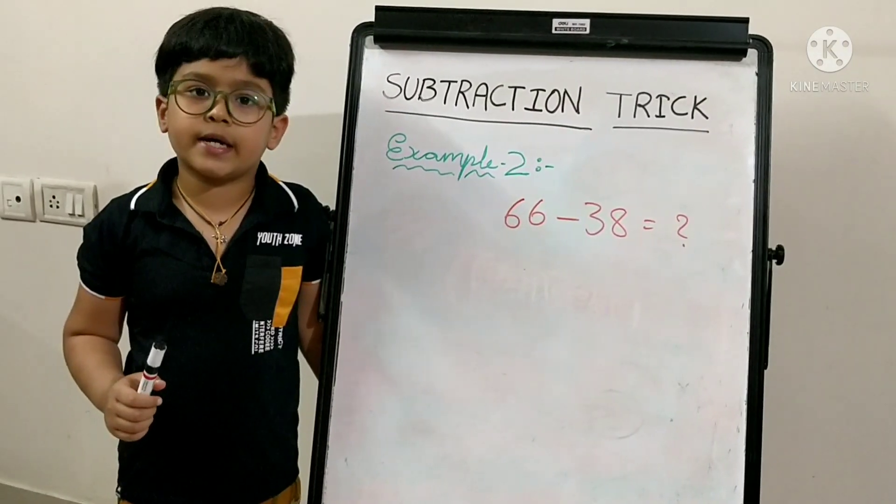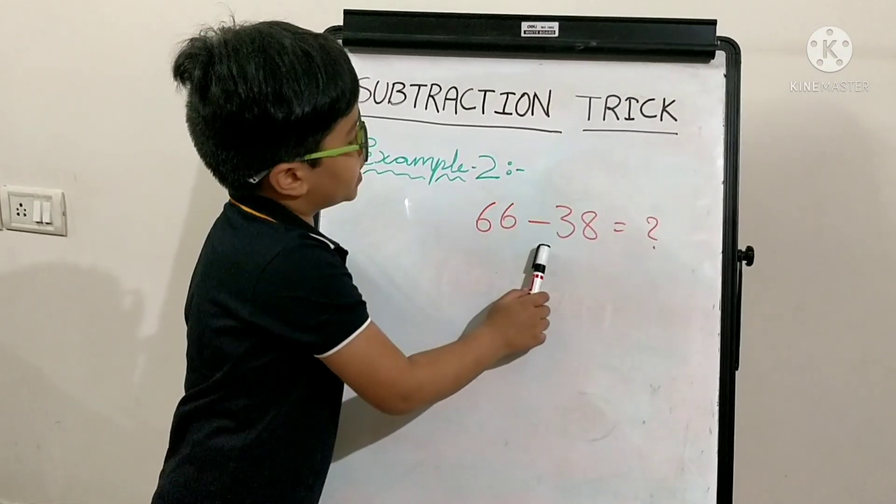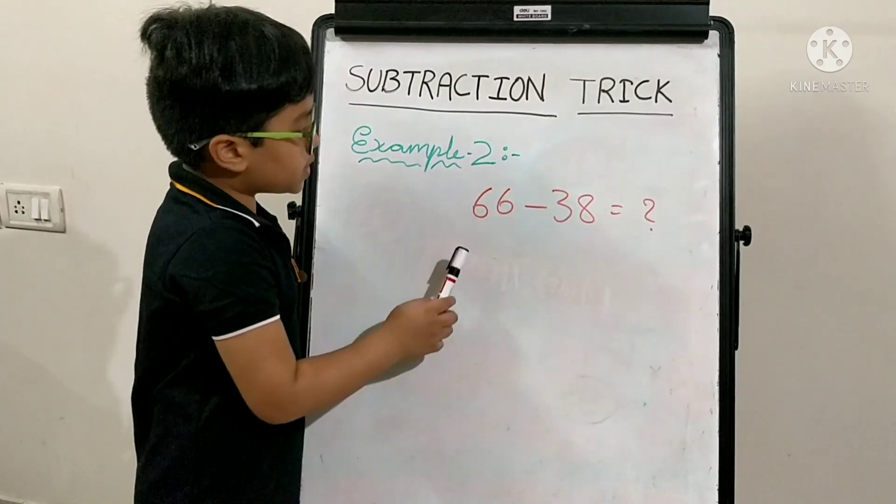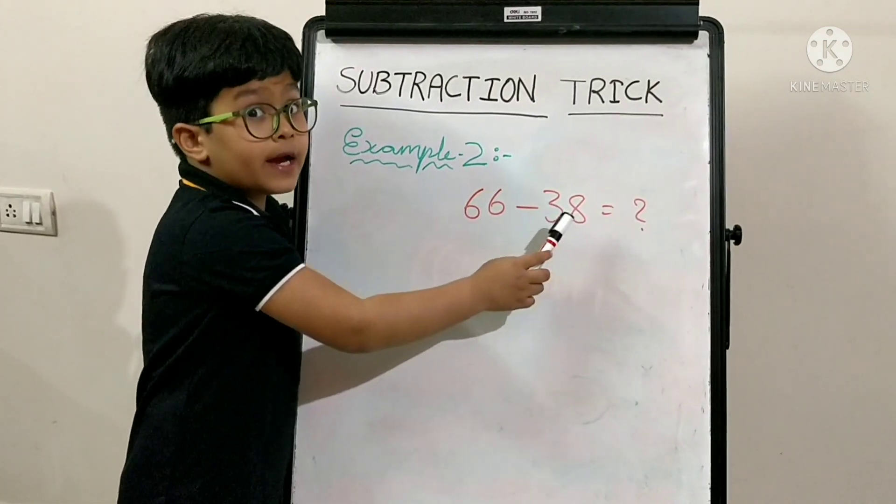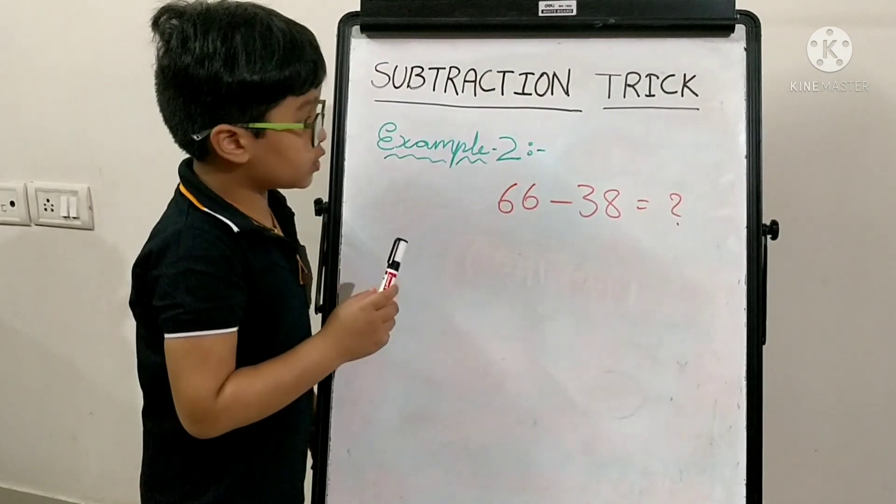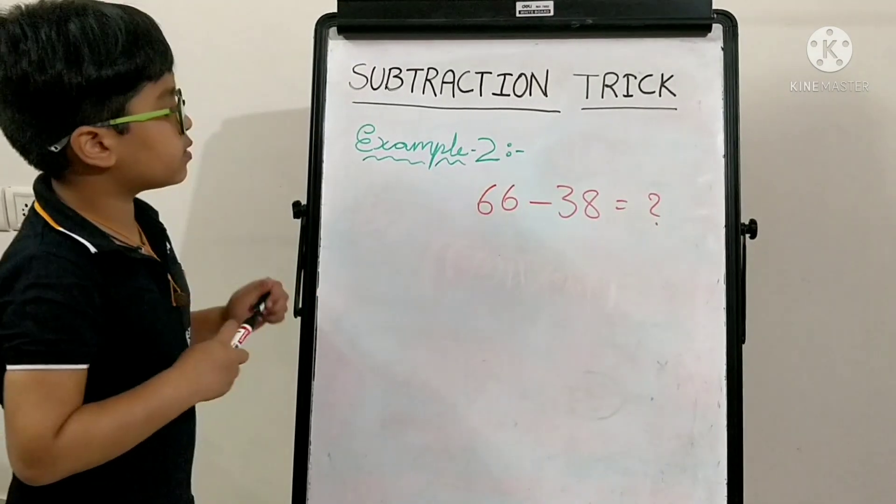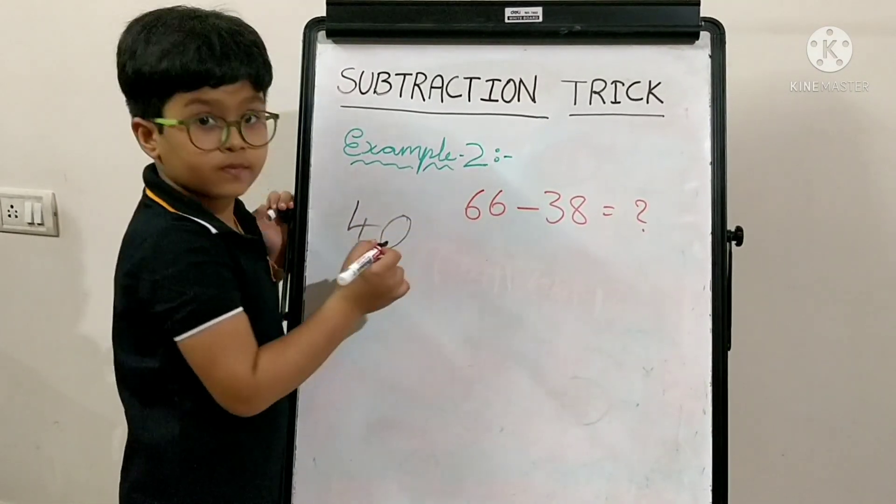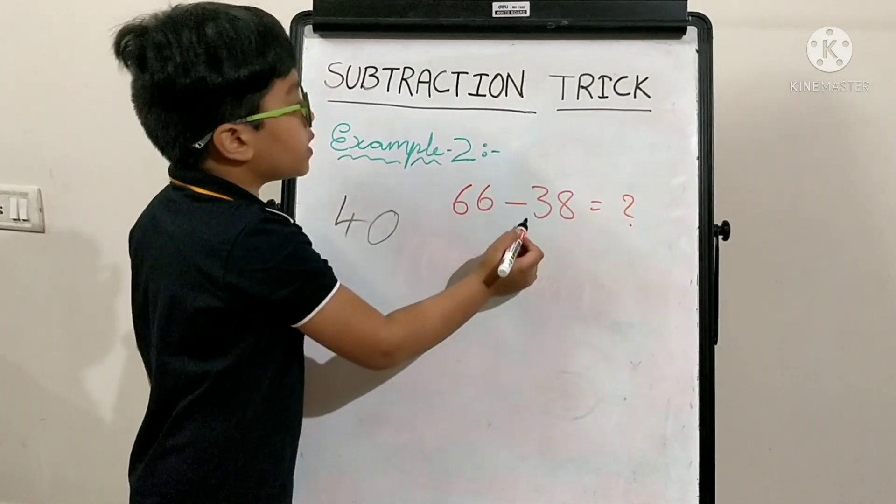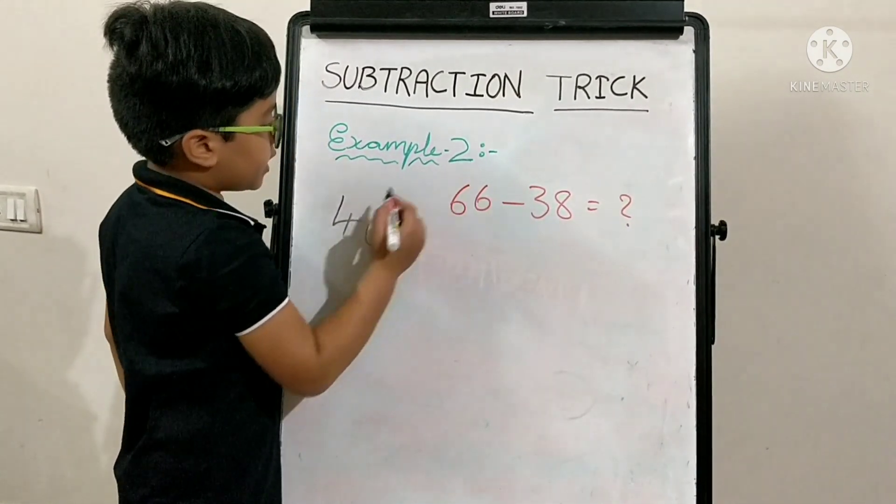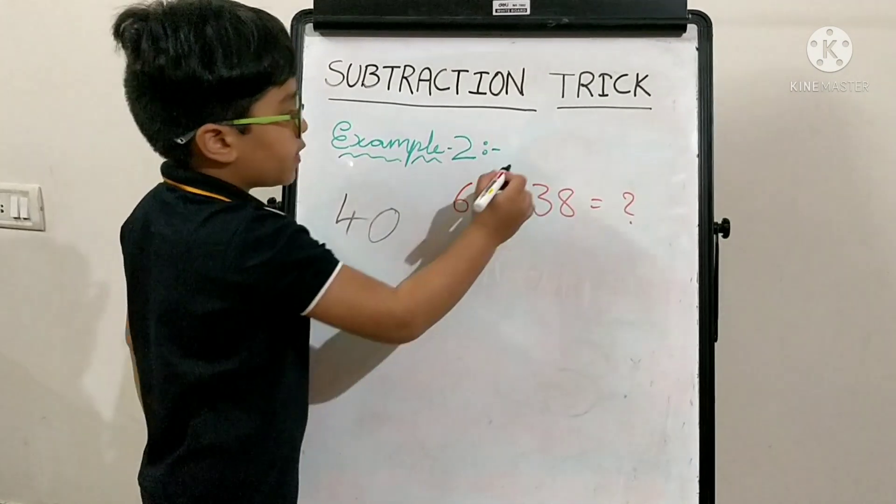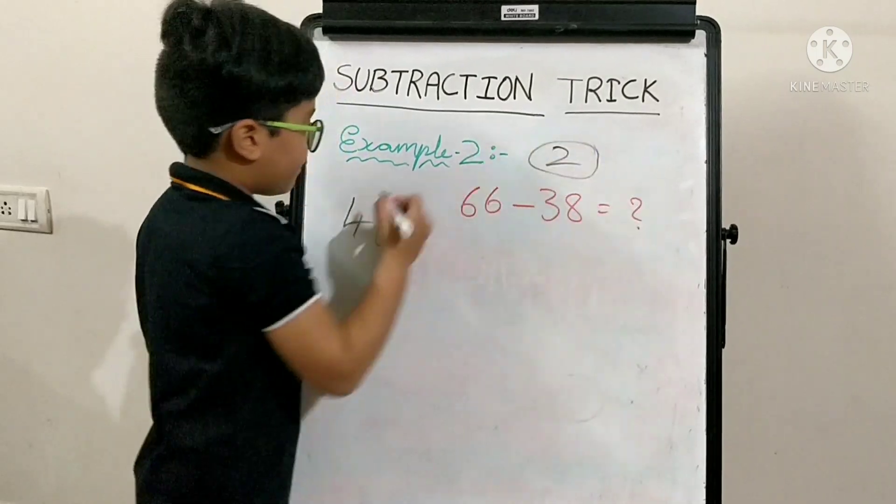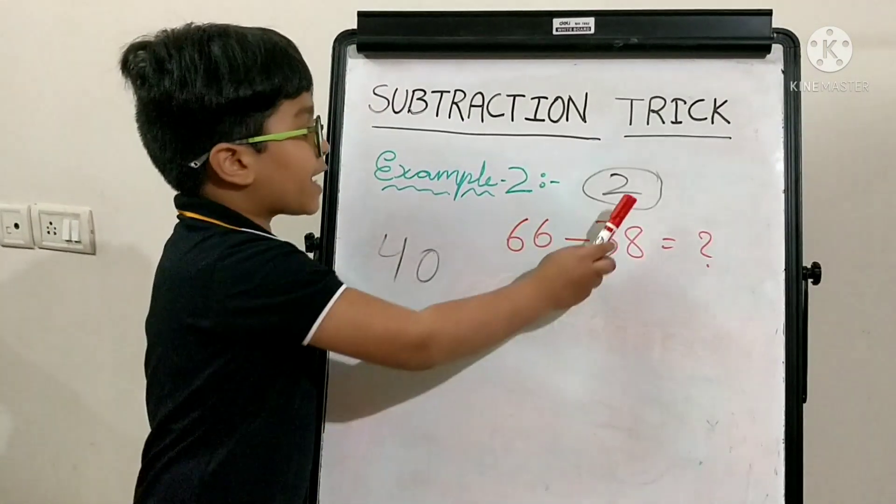Let's take another example as 66 minus 38. The first step is, you have to find the closest number in 10th table to 38. The closest number in 10th table to 38 is 40. You have to think how much if you add 38 will be 40. If you add 38 and 2, it will become 40. Mark this number.